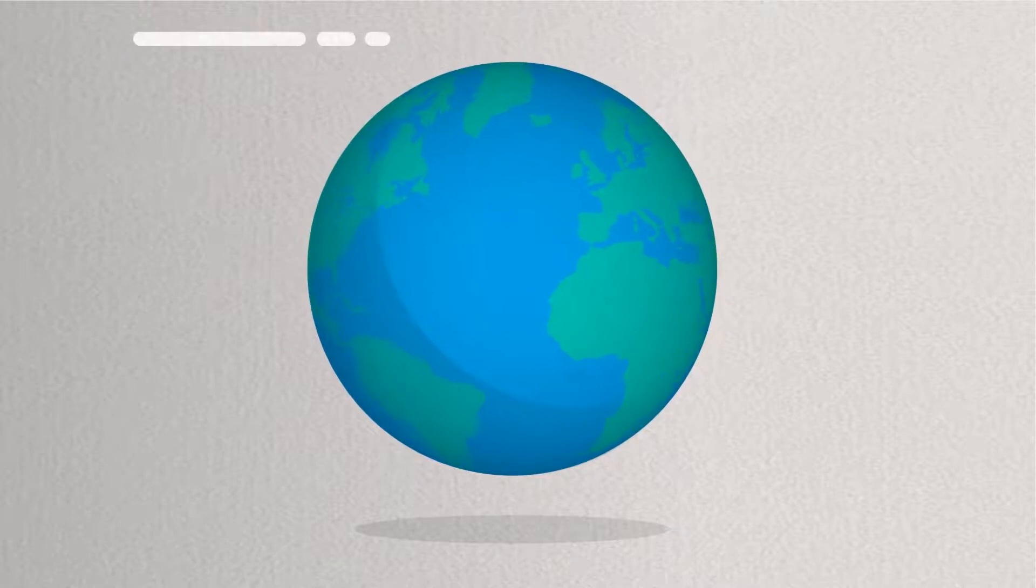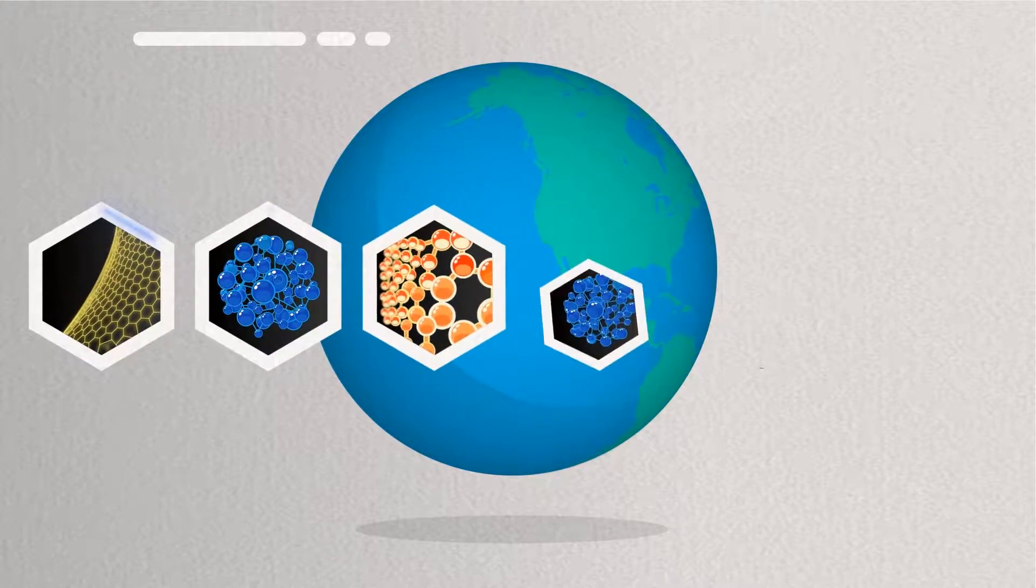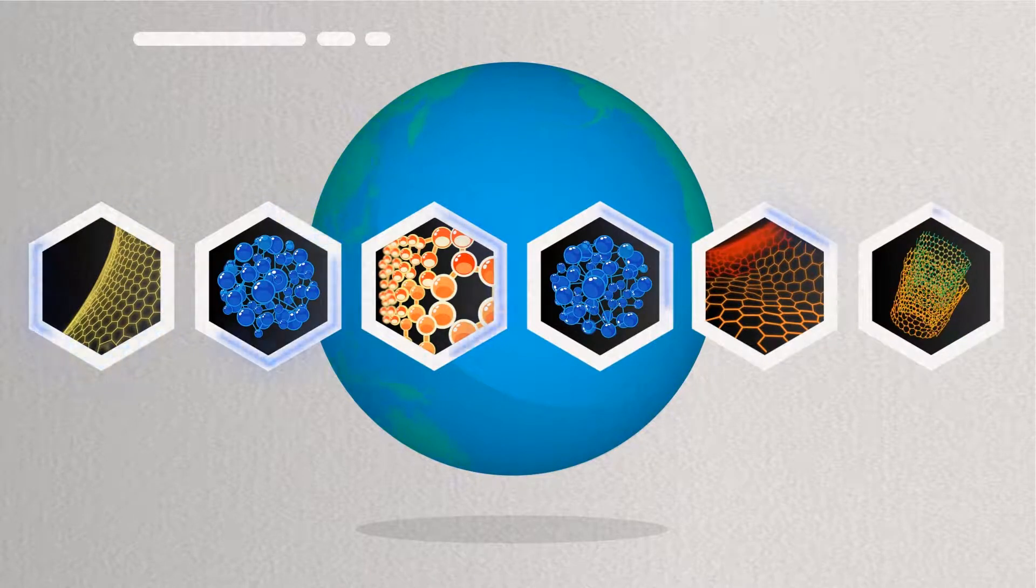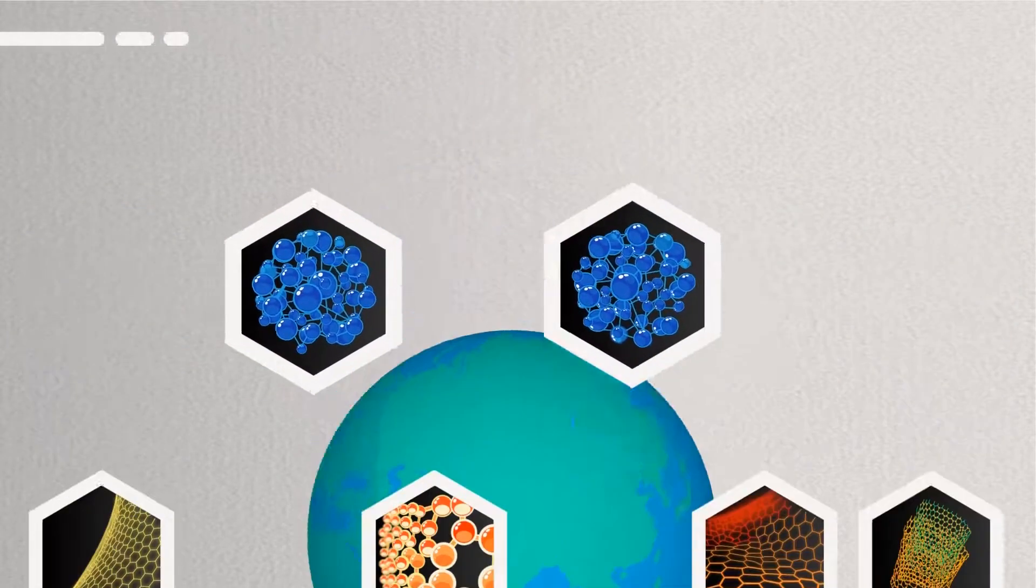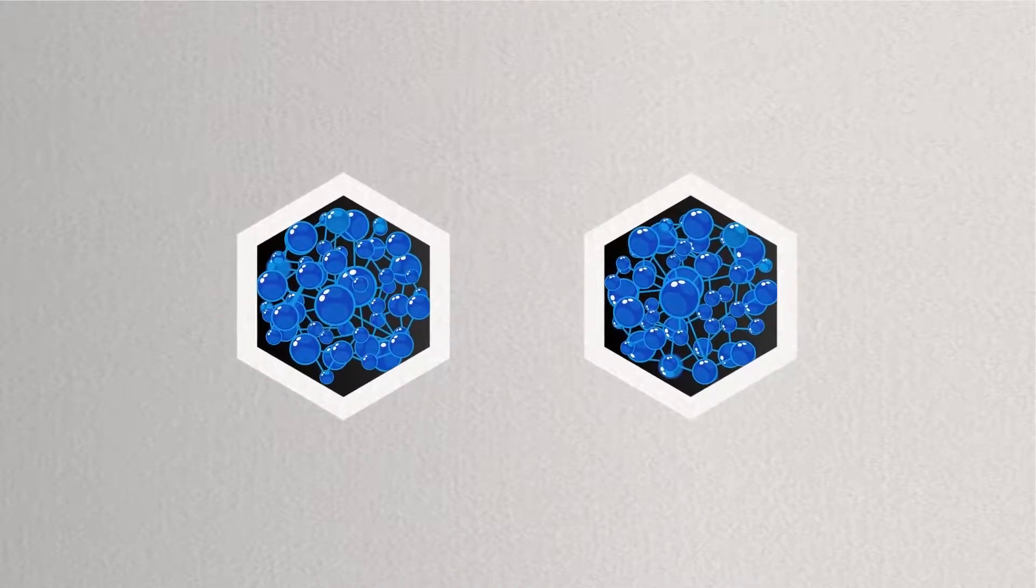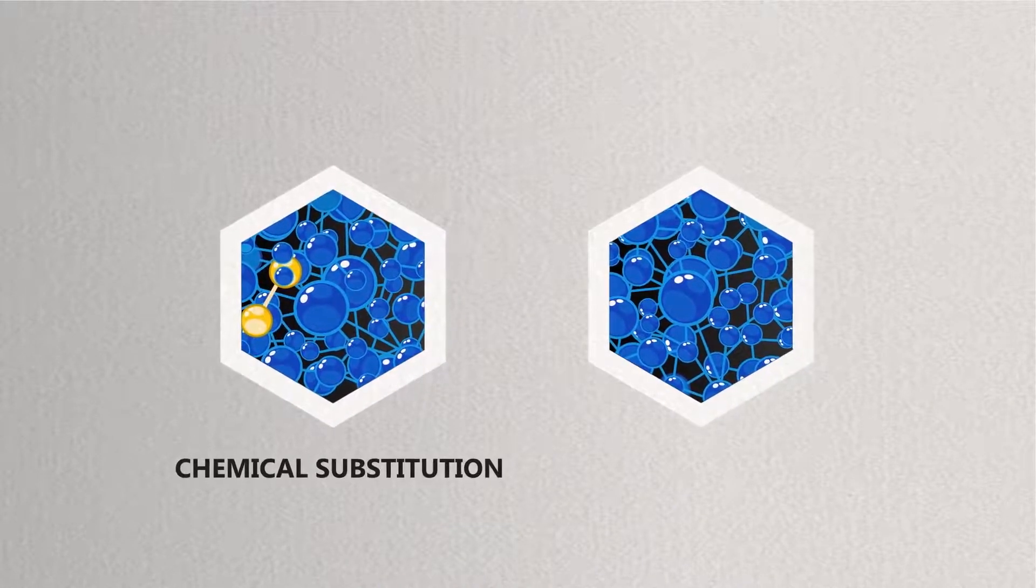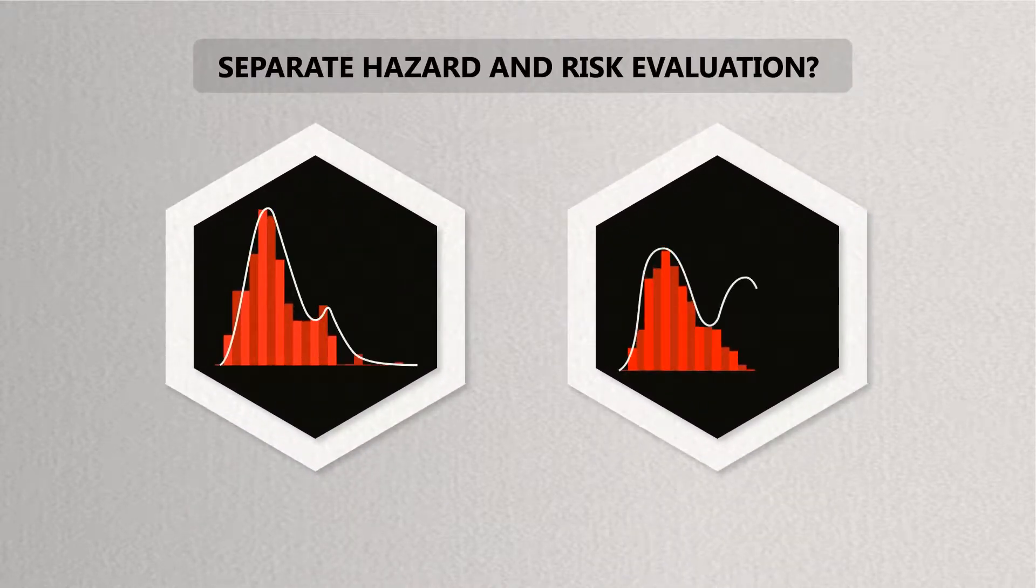With over 20,000 different nanomaterials being developed around the world, one of the most significant challenges is understanding how different one nanomaterial needs to be from another in terms of its size, shape and surface chemistry in order to be classified from a regulatory perspective as a distinct nano form. But does that require separate hazard and risk evaluation?